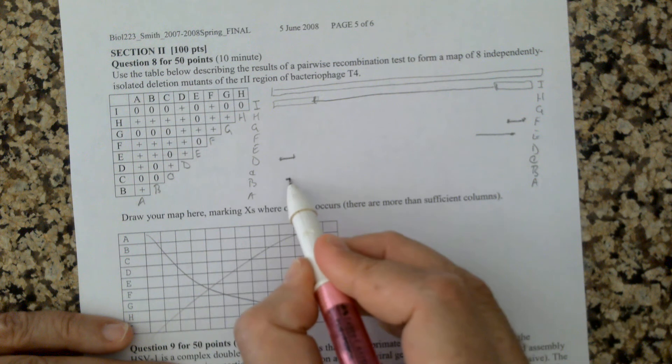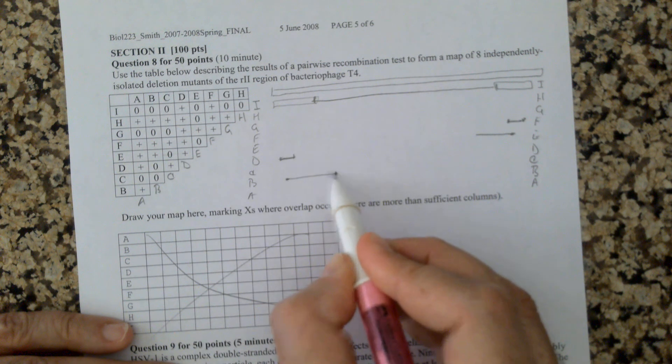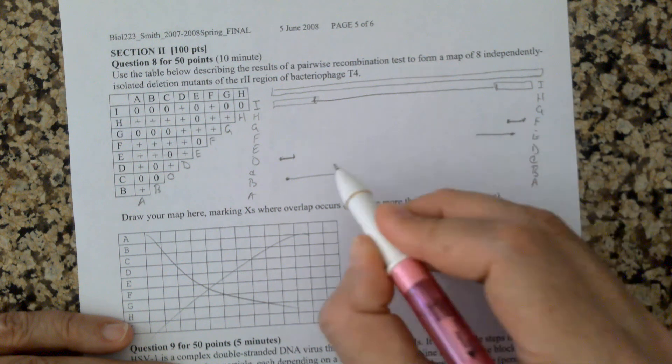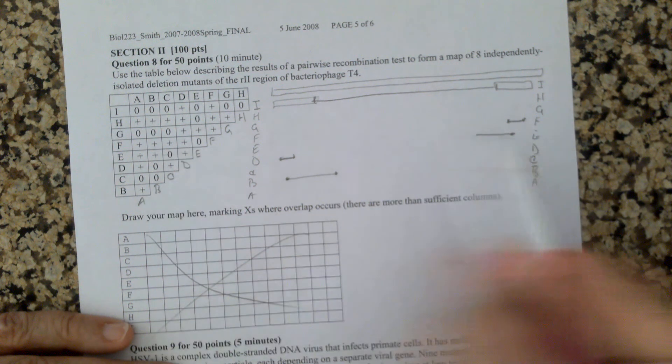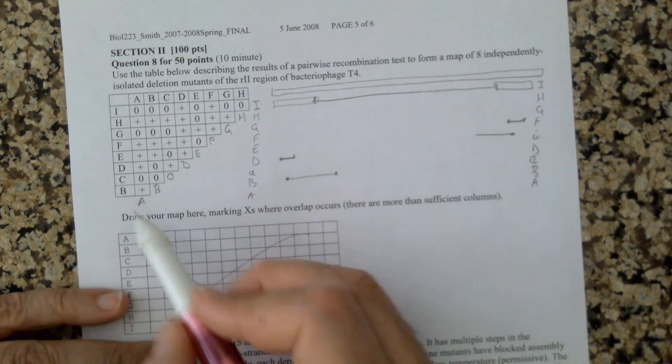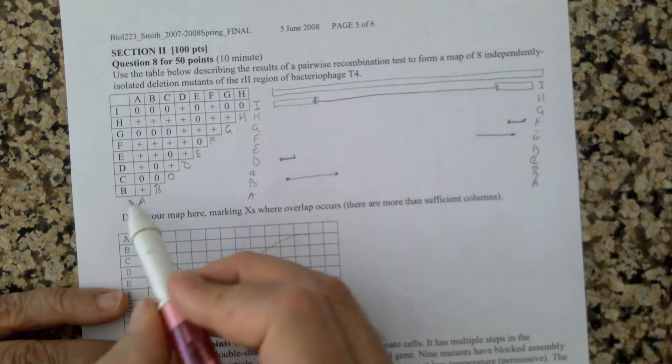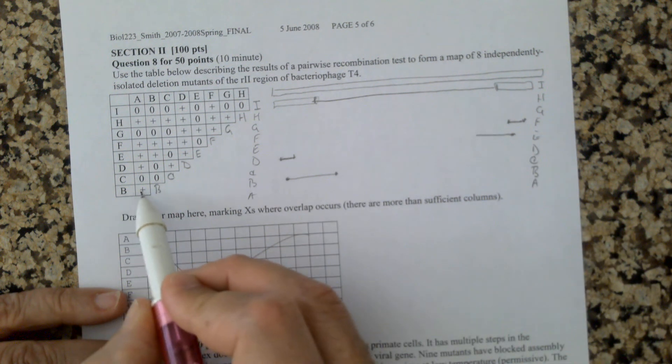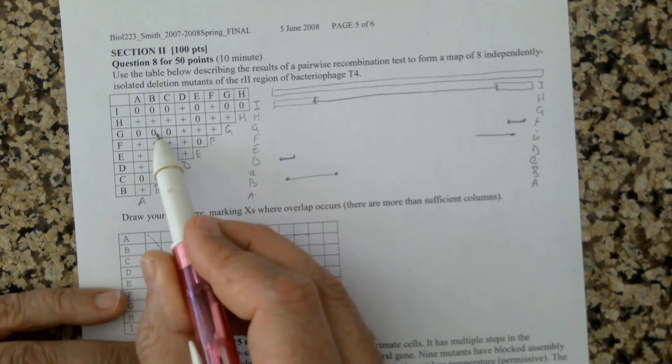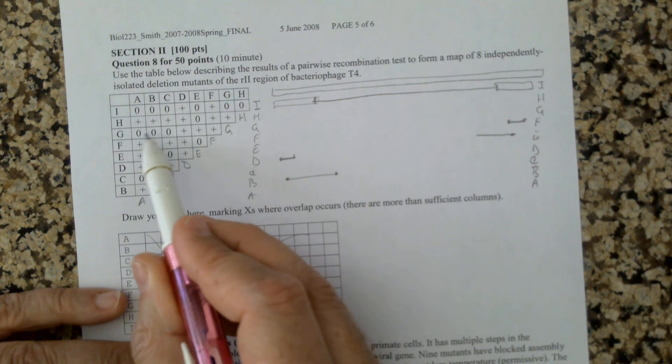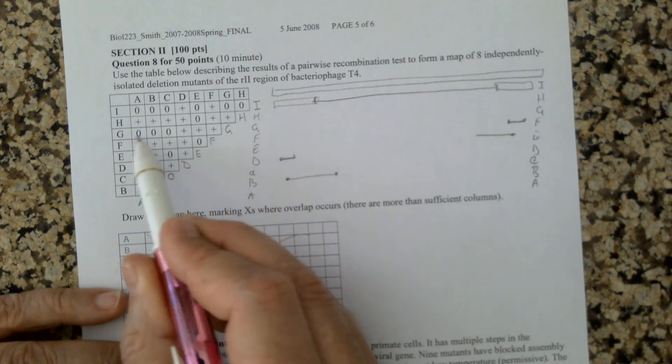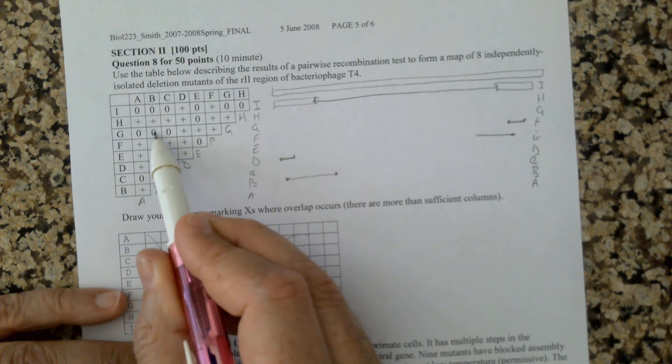In contrast D overlaps only with B, so B starts here, and B overlaps with I, G, C, D, so B extends into the realm of I. I and E and B don't overlap. B and E don't overlap, so let's work from one side or the other. So let's work with B.